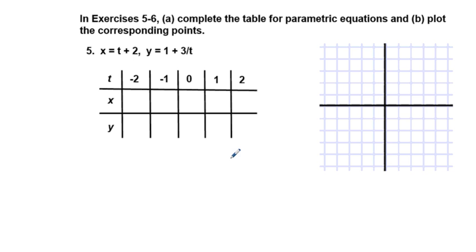Next, in exercise 5 and 6, complete the table for parametric equations and plot the corresponding points. Well, for this one, what we're going to do is input T values and fill in this table. And from the filled-in table, we're going to complete our graph and sketch it and see what it looks like. So part A is complete the table. So for this X equation, if we put, if T is negative 2, negative 2 plus 2 is 0.